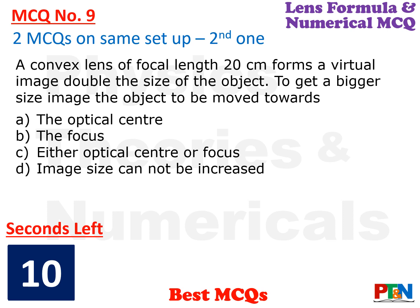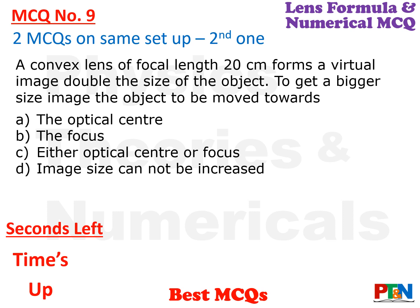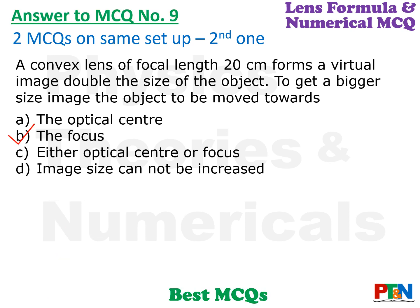MCQ 9 (same setup): A convex lens of focal length 20 cm forms a virtual image double the size of the object. To get a bigger image, should the object be moved towards the optical center, towards the focus, either, or can the image size not be increased? The answer is: towards the focus. If you move the object towards the focus, the size of the virtual image will increase.